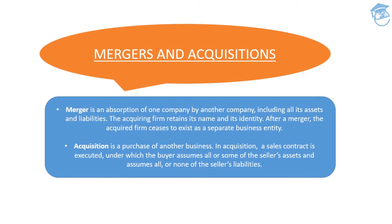In consolidation, both the acquiring firm and the acquired firm terminate their previous legal existence and form part of a new entity altogether. That is the difference between merger, acquisition, and consolidation. The best feature of merger is that it may happen without even the introduction of cash. In acquisition, cash or bank transactions will definitely exist, but a merger does not require cash — that is the beauty of merger and how it differs from acquisition.